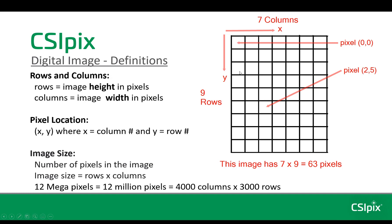The row numbering goes zero, one, two, three, four, five, six, seven, eight. So this pixel's x and y coordinates are two and five. Image size refers to the number of pixels in an image. You just multiply the number of rows by the number of columns. So this image has seven times nine equals 63 pixels. A 12 megapixel image has 12 million pixels, probably arranged something like 4,000 columns by 3,000 rows.